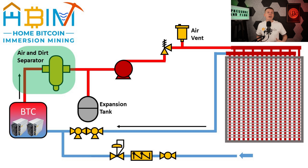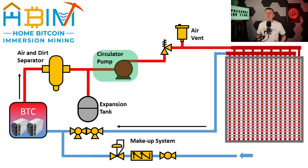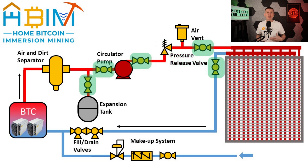With all that air leaving the cooling loop, fluid must be added back in to keep the system pressurized, so a makeup system must be added to ensure the loop always stays filled and maintains system pressure. Next, to move the fluid through the loop, we need a circulator pump. And finally, the system needs a few valves: filling and draining valves to fill and drain the system, a pressure release valve to protect the system in case of overpressurization, and additional valves to close off parts of the system for servicing or controlling where the heat flows to different parts of the house.